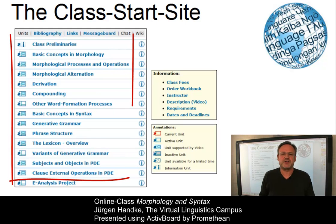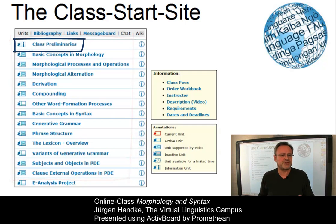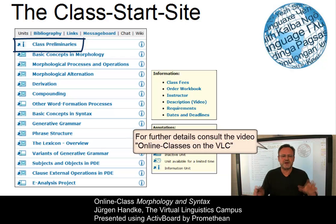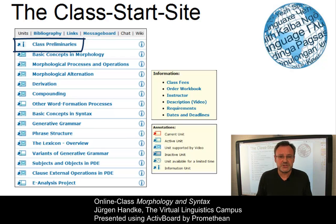The core of the class are the 14 units, where the first one — the class preliminaries — informs you about some general aspects of the class and makes further suggestions about how to study online. Also, the most basic functions of the program, that is navigation buttons, etc., are explained here, and you will find helpful options and routines that let you know whether your computer is configured correctly and whether the submission of the worksheets is successful.